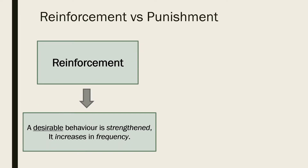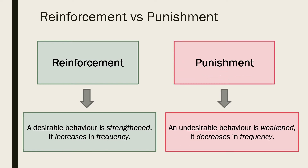Reinforcement is when a desirable behaviour is strengthened. This means that the behaviour is occurring more frequently as a result of the consequence that the learner receives for performing it. Punishment on the other hand is when an undesirable behaviour is weakened, therefore it is occurring less frequently due to the learner receiving an unpleasant consequence.